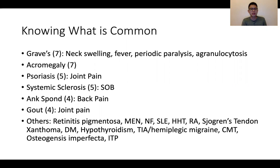Going back to what comes out commonly, this is a quick trawl of the common conditions that came out in Station 5 over the recent years, looking back at the records that were shared. Endocrinopathies as well as rheumatological disorders feature very heavily in the Station 5 exam. The commonest conditions — Graves', acromegaly, psoriasis, systemic sclerosis, and ankylosing spondylitis — probably account for a good 50% to 60% of Station 5 cases.